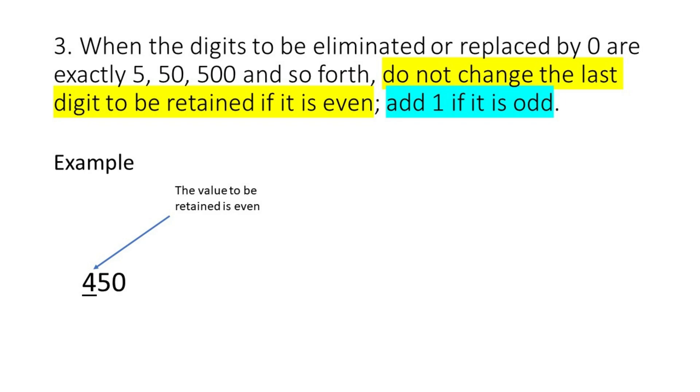And lastly, we have an example here that fits rule number 3. If we round off 450 to the nearest hundreds, the digit to be retained is 4 which is even, and the digit to be eliminated or replaced by 0 is exactly 50. In this case we shall not change the digit to be retained, hence our answer is 400.